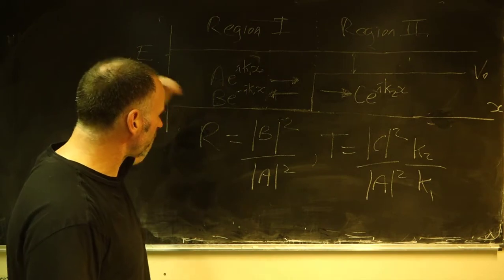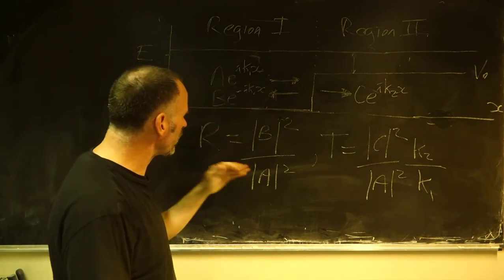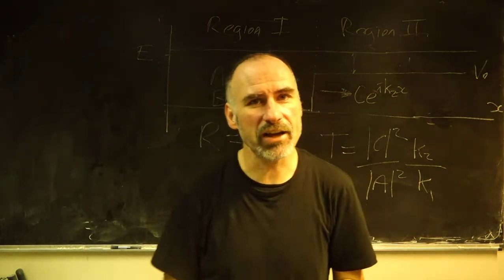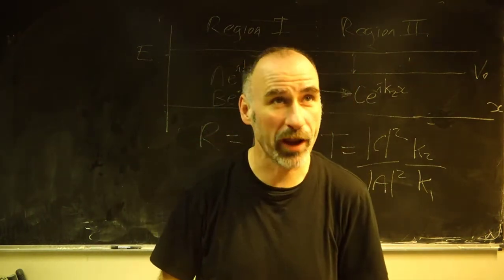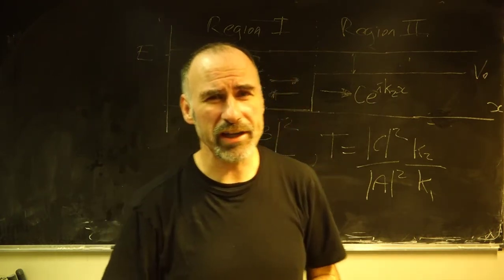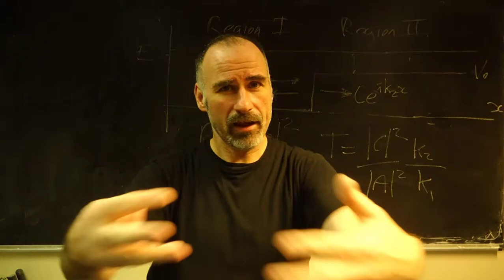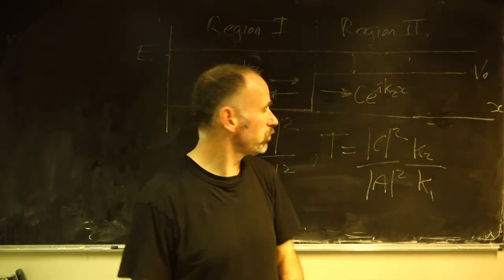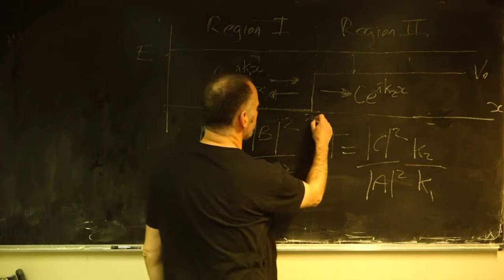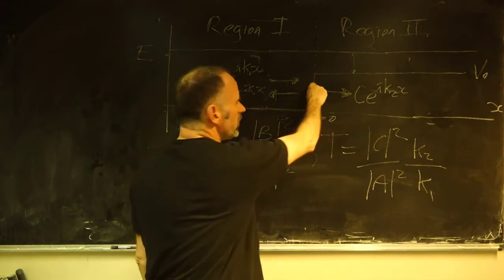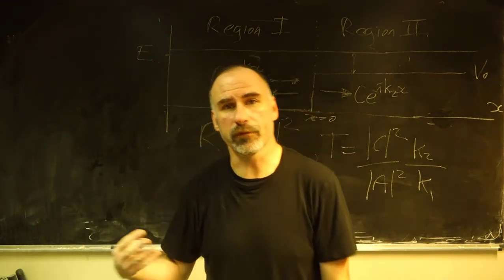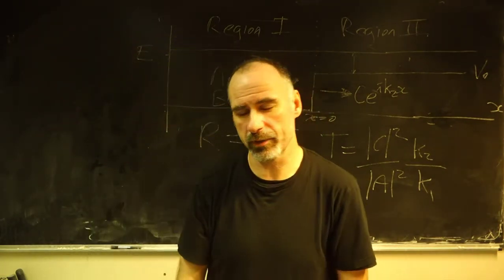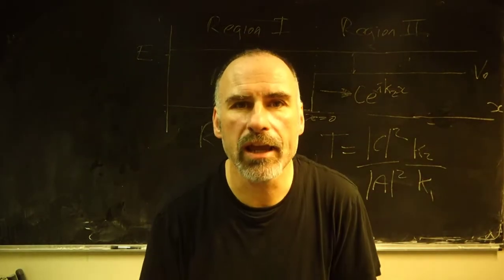The next step is we don't know B and A, so we need to define the ratio B/A and C/A. We do this by matching boundary conditions at x = 0 — this is something you looked at previously. We match the wave function at x = 0, and we also match the first derivative of the wave function at x = 0, because the wave function and its first derivative must both be continuous.